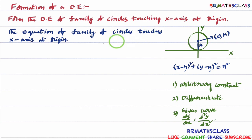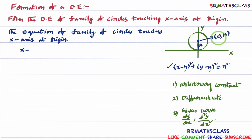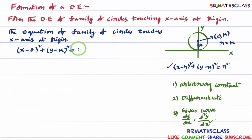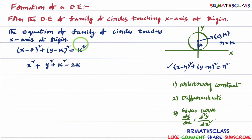The equation of family of circles touching x-axis at origin: using the formula (x−h)²+(y−k)²=r², center is (0, k) so h=0, k=k, and radius is k. Substituting: (x−0)²+(y−k)²=k². Expanding: x² + y² + k² − 2ky = k². The k² terms cancel, giving x² + y² = 2ky.